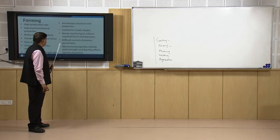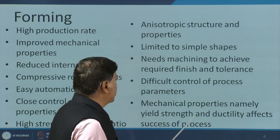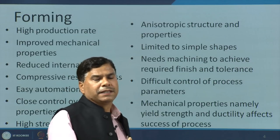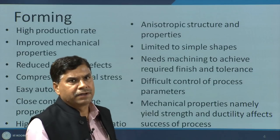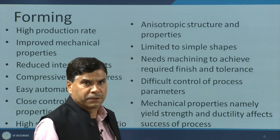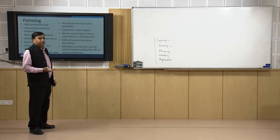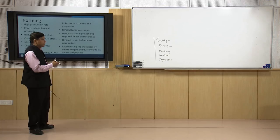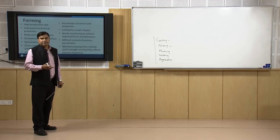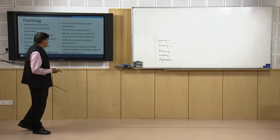Another important limitation is that mechanical properties — namely yield strength and ductility — affect the success of the process. Normally whenever work hardening takes place, strength and hardness increase, but at the same time the ductility of the work-hardened component comes down. Products made using forming processes may experience localized loss of ductility as well as toughness. We need to be very careful — if the application of a component made by forming requires toughness as well as ductility, we need to be careful to avoid premature failure.